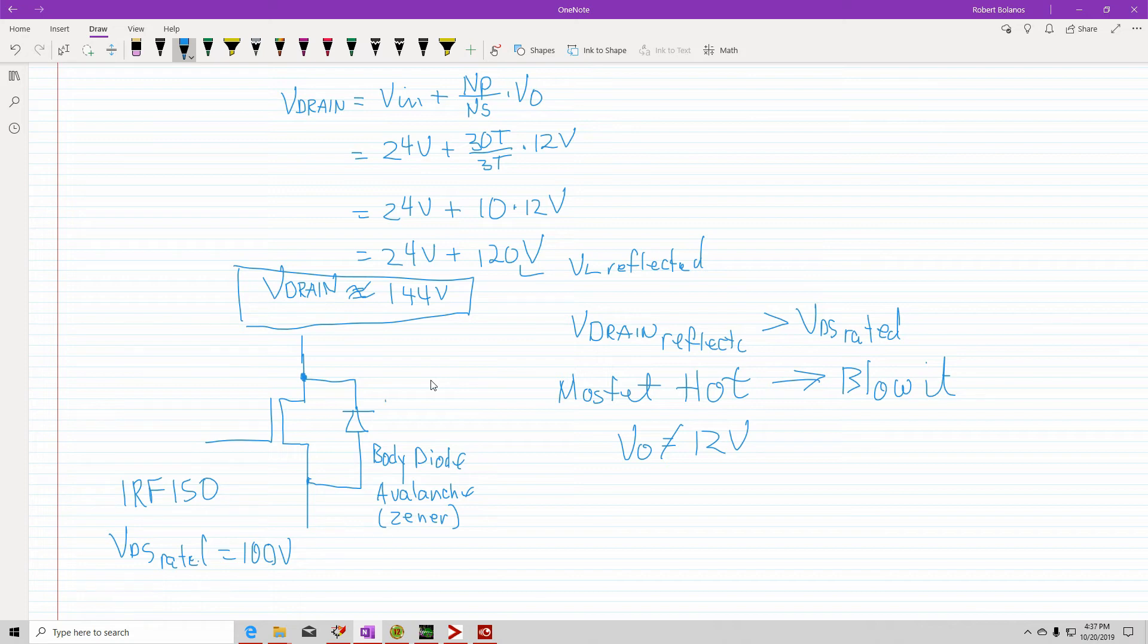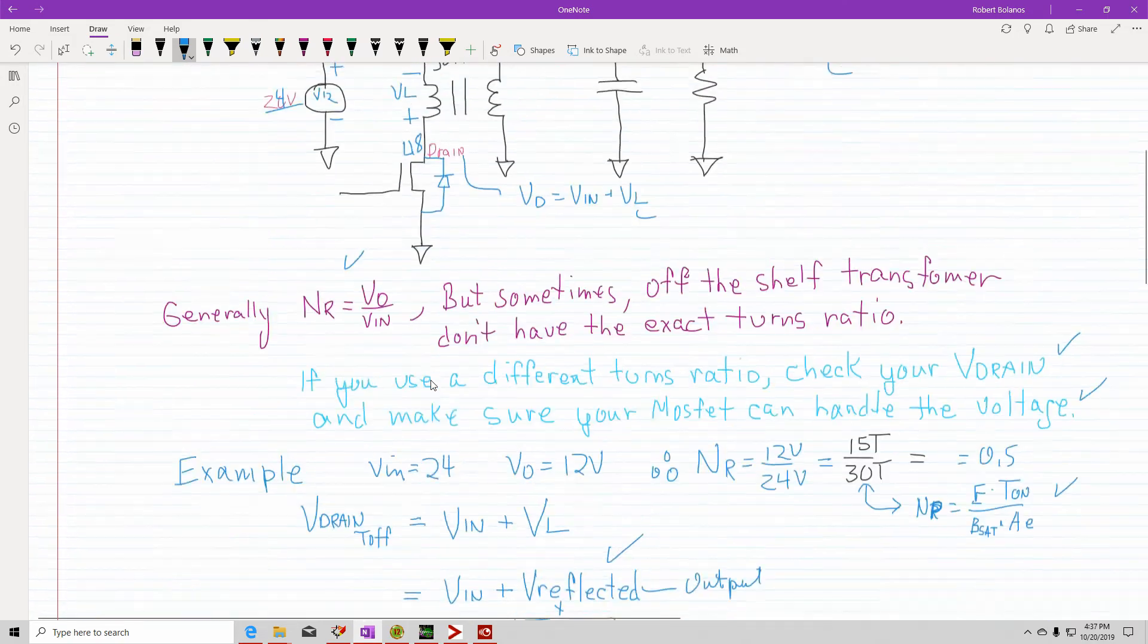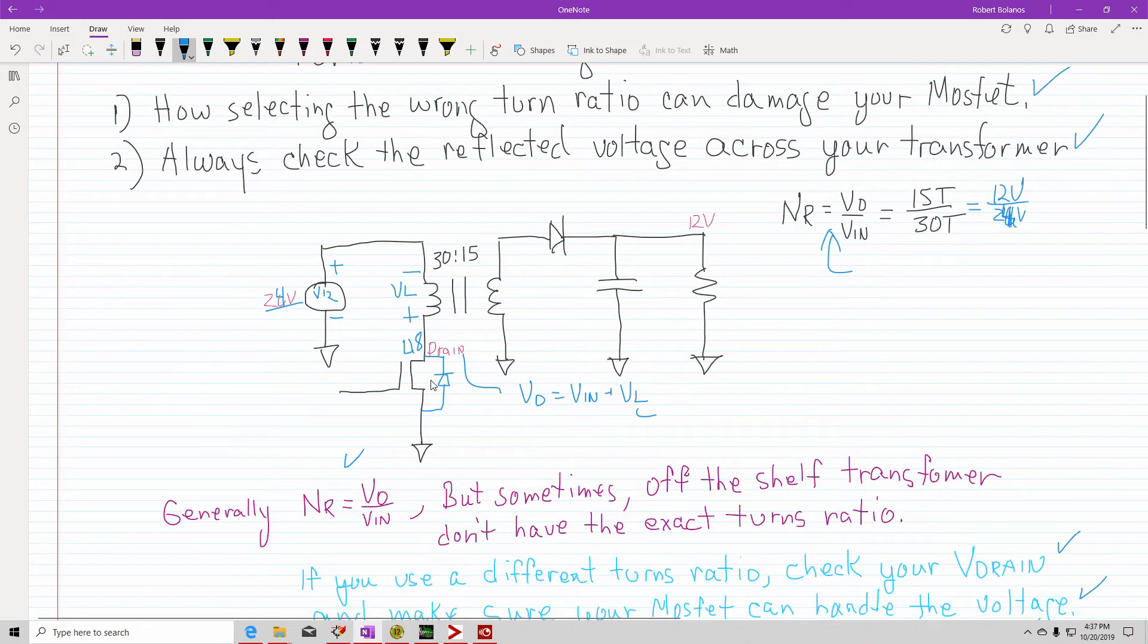And it clamps the voltage to about 100 volts. So that means this drain, in order for the voltage to work, has to go all the way to 148. This has to go to 148 for it to properly generate 12 volts. But it can only go up to 100 volts because of the Zener action of this. It's kind of like a Zener. And it means that during the time off,